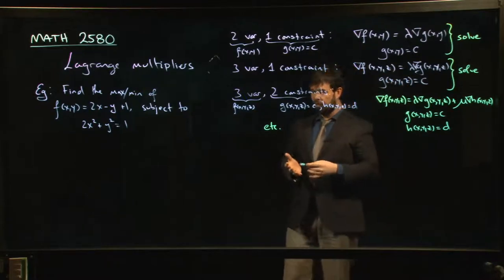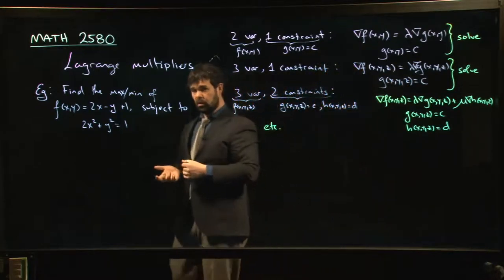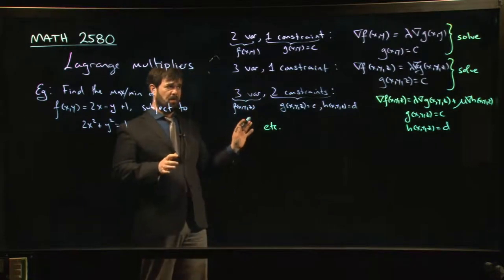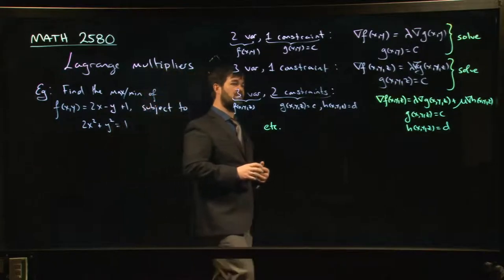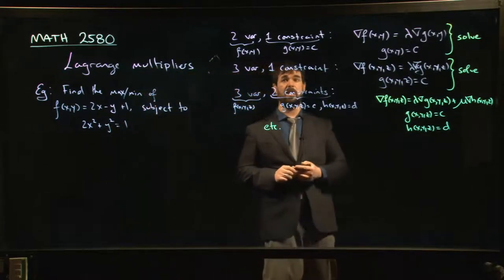The third equation comes from the constraint itself. Now you have three equations, three unknowns, so at least in principle, you can solve. By the way, one of the troubles with finding good Lagrange multiplier problems is that the equations can get really ugly in a hurry.